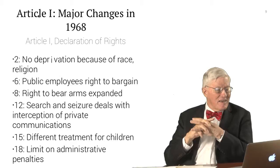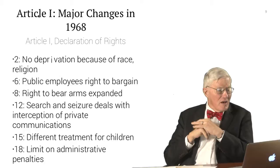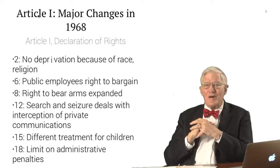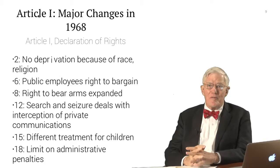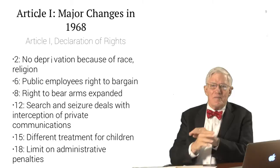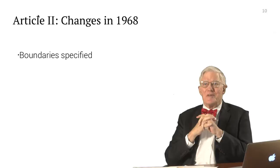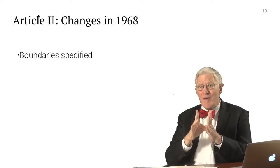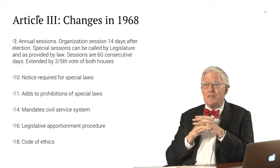The major changes in 1968: Article 1, Section 2 had no deprivation because of race or religion. Public employees were given a right to bargain. There was expansion of the right to bear arms. Search and seizure provisions were augmented with references to interception of private communications — wiretapping, for instance. It had a provision relating to different treatment of children and a limitation on administrative proceedings. Article 2 kept changes relating to boundaries.